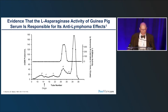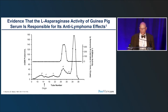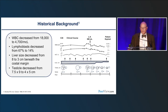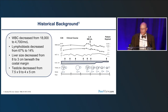Going back to 1961, a group of investigators looked at the effects of asparaginase in an anti-lymphoma model and found they could interfere with cell division and achieve serum levels of asparaginase in the animals they were testing. This led to a case report where investigators gave asparaginase to a patient in 1966 who had a response — white count went from 18,000 to 4,000, lymphoblasts decreased to 14%, the patient's liver decreased in size, and testicular enlargement also decreased.